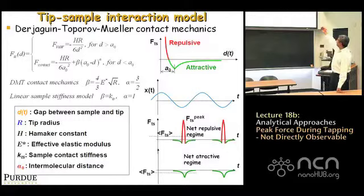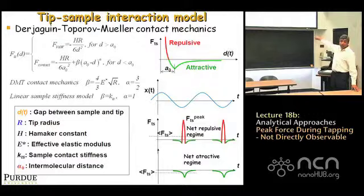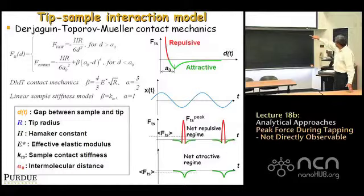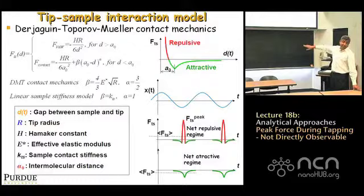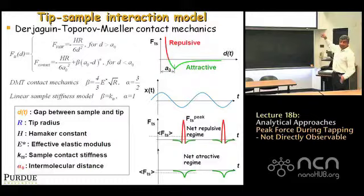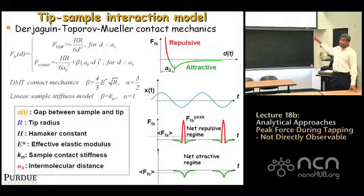You can also have other models like a linear sample stiffness model — no interaction until you hit the sample, and the sample behaves like a spring with some spring constant. When you have an attractive and repulsive regime and you plot the history of interaction forces as a function of time, you can have two situations. One where the interaction force is negative most of the time — the tip feels Van der Waals forces and moves away, giving an inverted tent shape. That implies only attractive forces, giving a net attractive regime.